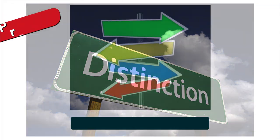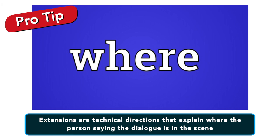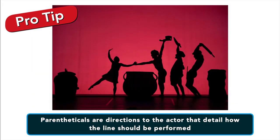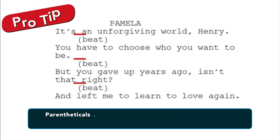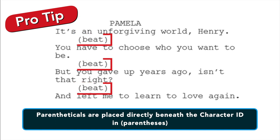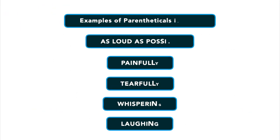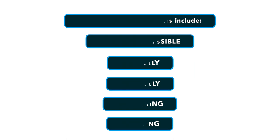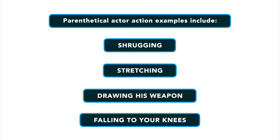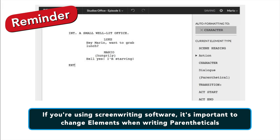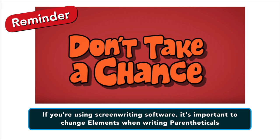Number five are parentheticals. Parentheticals can seem like extensions at first glance, but there are key distinctions. Extensions are technical directions — they explain where the person saying the dialogue is in the scene. Parentheticals are directions to the actor themselves; they detail how the line should be performed. As far as script format goes, parentheticals are placed directly beneath the character ID in parentheses. Examples include 'as loud as possible,' 'painfully,' 'tearfully,' 'whispering,' or 'laughing.' Parentheticals can also include actions for actors to perform while speaking, such as 'shrugging,' 'stretching,' 'drawing his weapon,' or 'falling to their knees.' If you're using screenwriting software, it is important to change elements when writing parentheticals — you can't just write them into parentheses and hope it reads correctly.